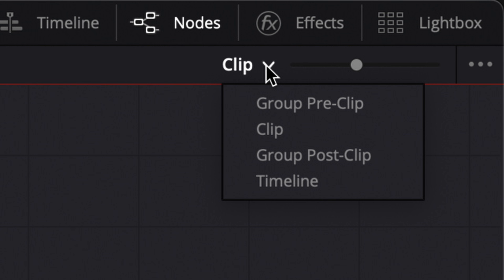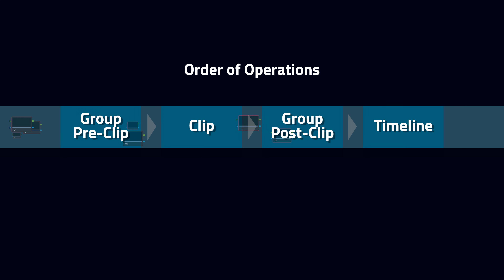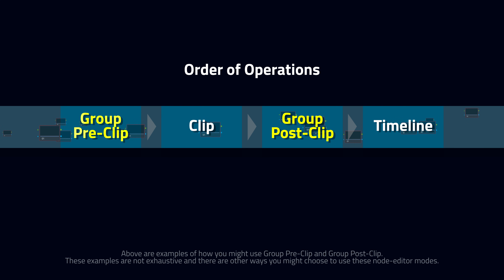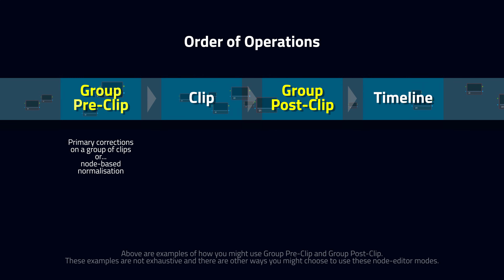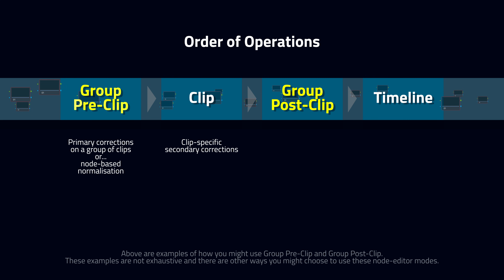Let's go back to our interview clip. Even though this clip is now in a group, specific corrections can still be applied to this clip individually in the Clip tab, or to every clip in the timeline using the Timeline tab. The Group Pre-Clip and Group Post-Clip tabs allow you to choose whether those group corrections are applied before or after any clip-specific corrections are applied.